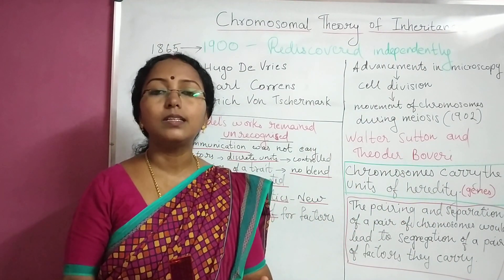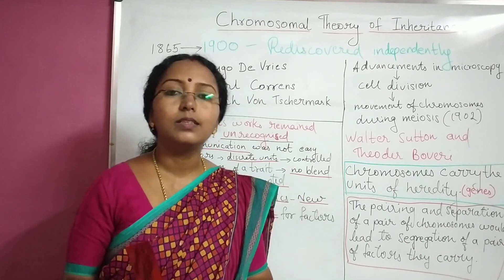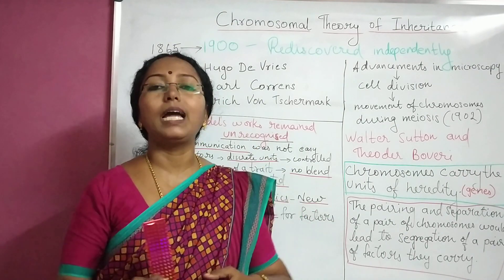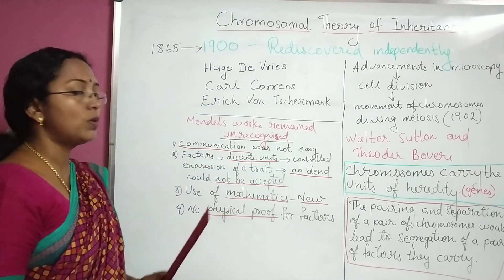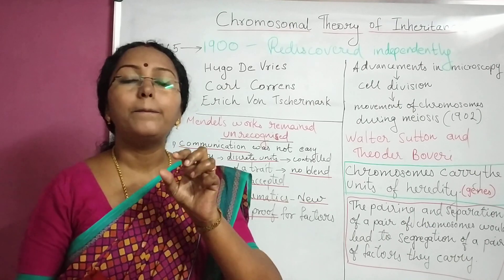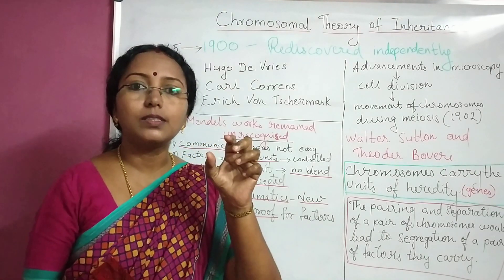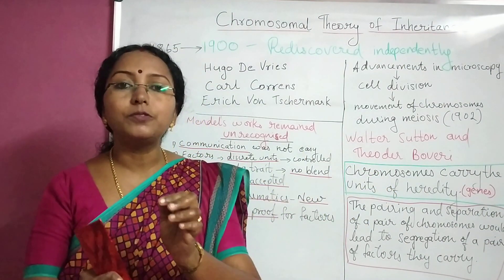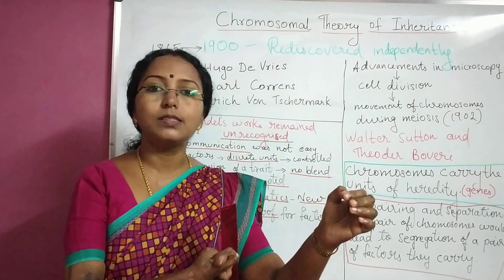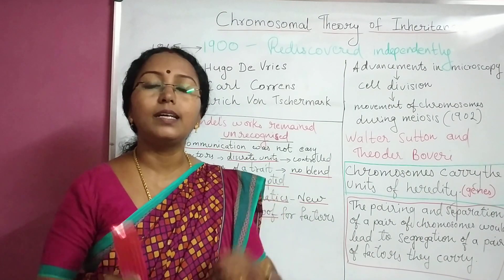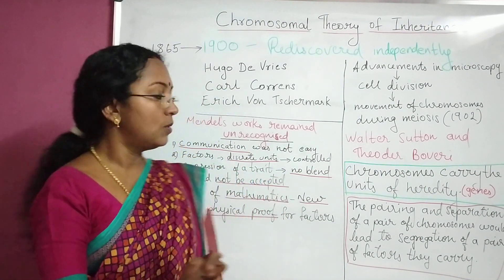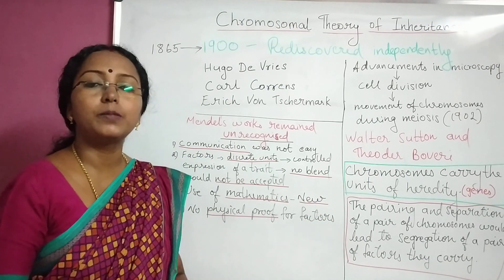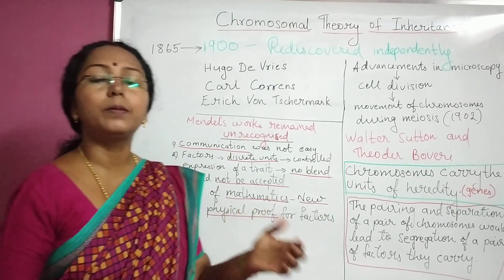The third reason was that Mendel used mathematical calculations to arrive at general conclusions. The concept of applying mathematics in biological science was an entirely new concept which could not be accepted. The use of mathematics was entirely new in the biological field, and it was not acceptable by his contemporaries in those days.